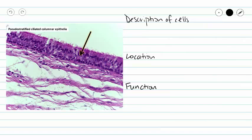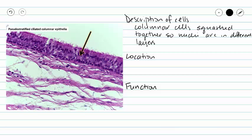Now let's take a look at our tissue in specific. So I already kind of gave you a description of our cells. They are going to be columnar, but they are going to be squashed together so that our nuclei are forced into different layers. And then we also have those cilia, so our apical surface is going to look hairy.